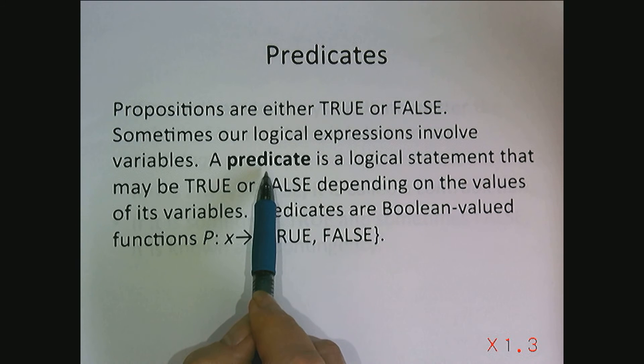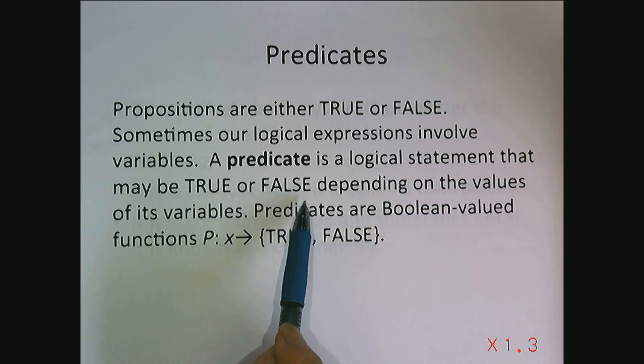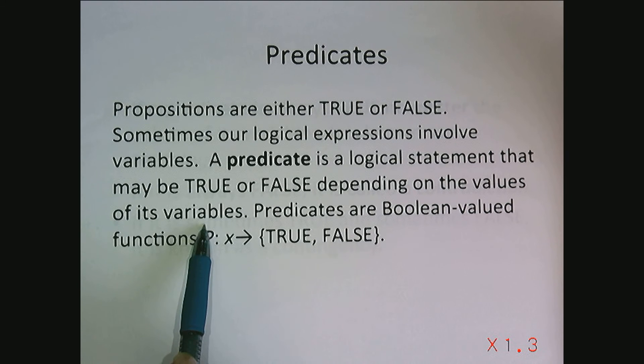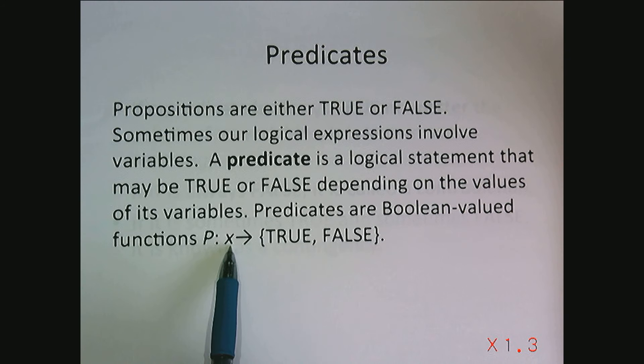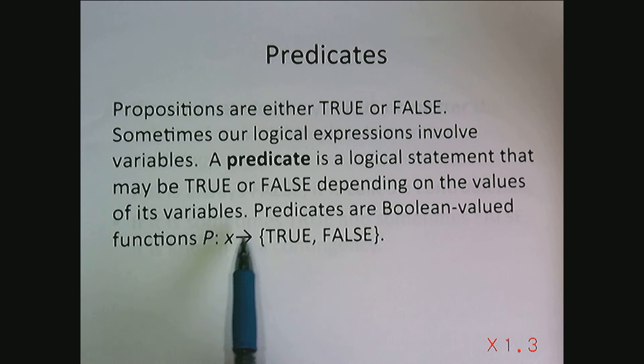A predicate is a logical statement that may be true or false depending on the values of its variables. Predicates could contain variables and if they do, the predicates can be thought of as Boolean valued functions that take inputs for the variables and then you could evaluate the logical statement as either true or false. Once you input the variables, it's not both, it has to be either true or false.